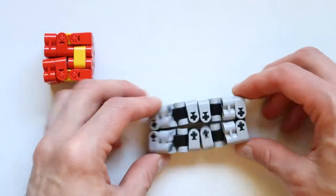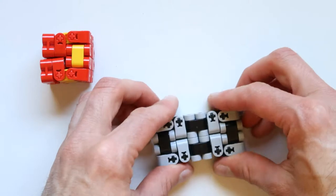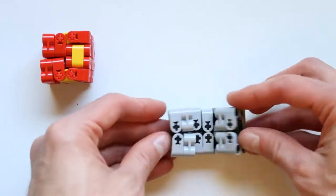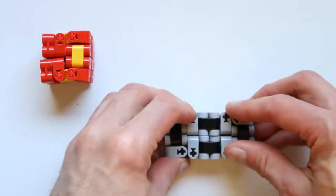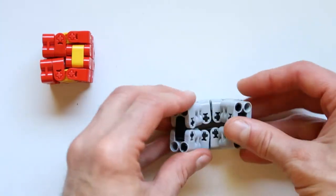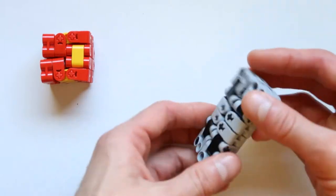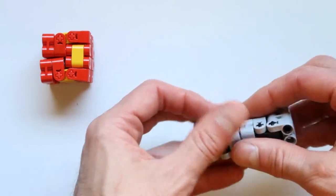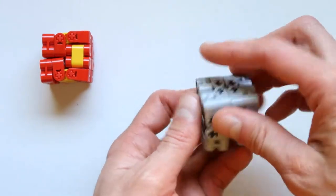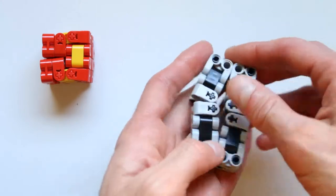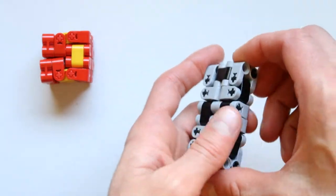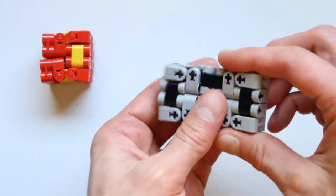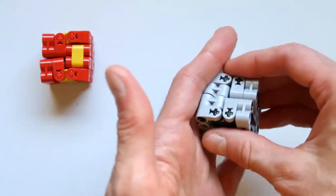So like the fidget spinner, you can do all kinds of neat little things with this. Put this together and take a look at this. Really interesting. So this is what it does. And you can just play around with it like that. So that's the silver one.